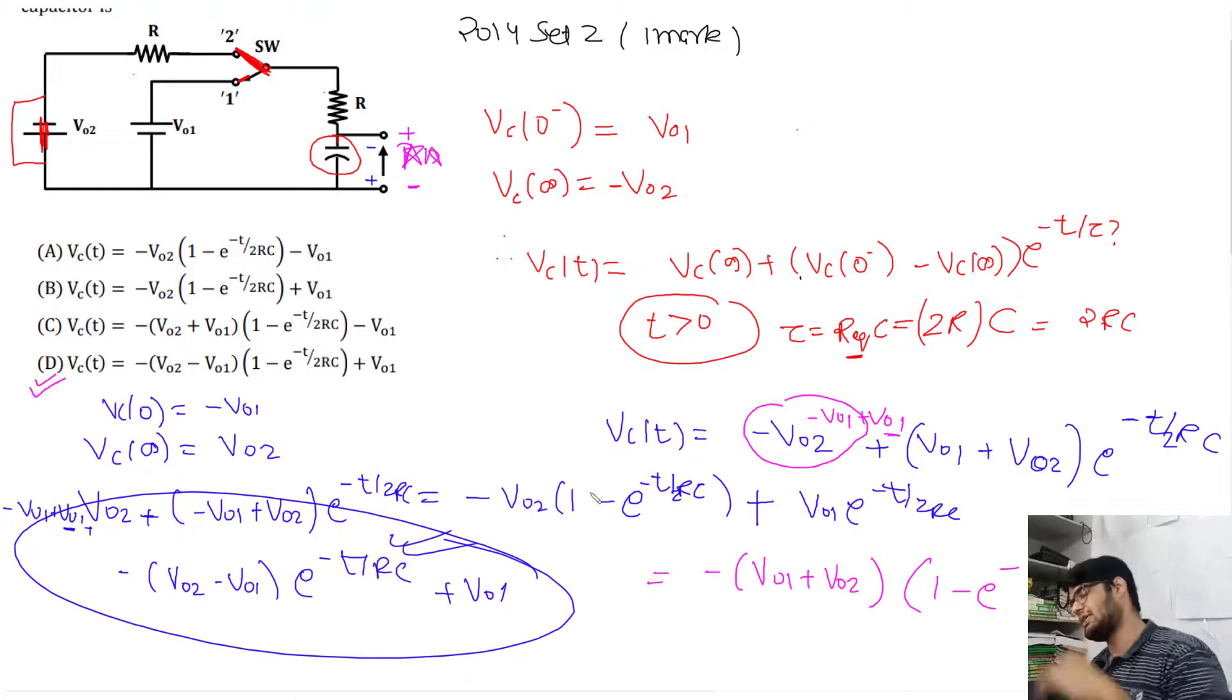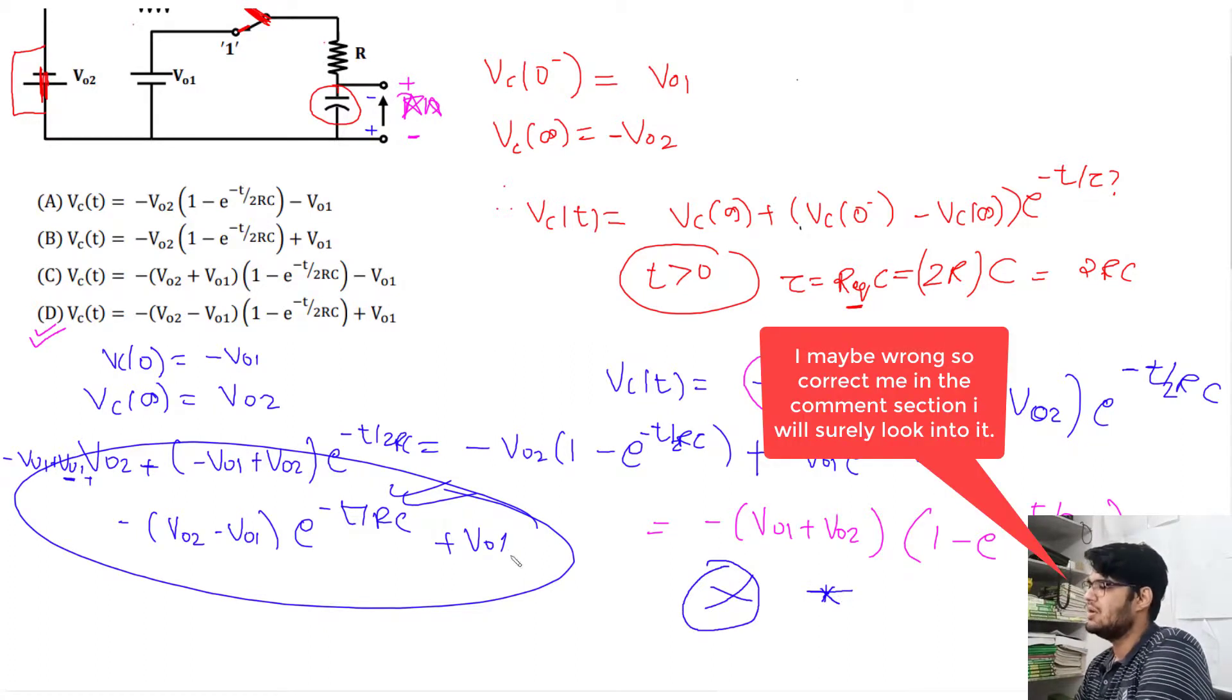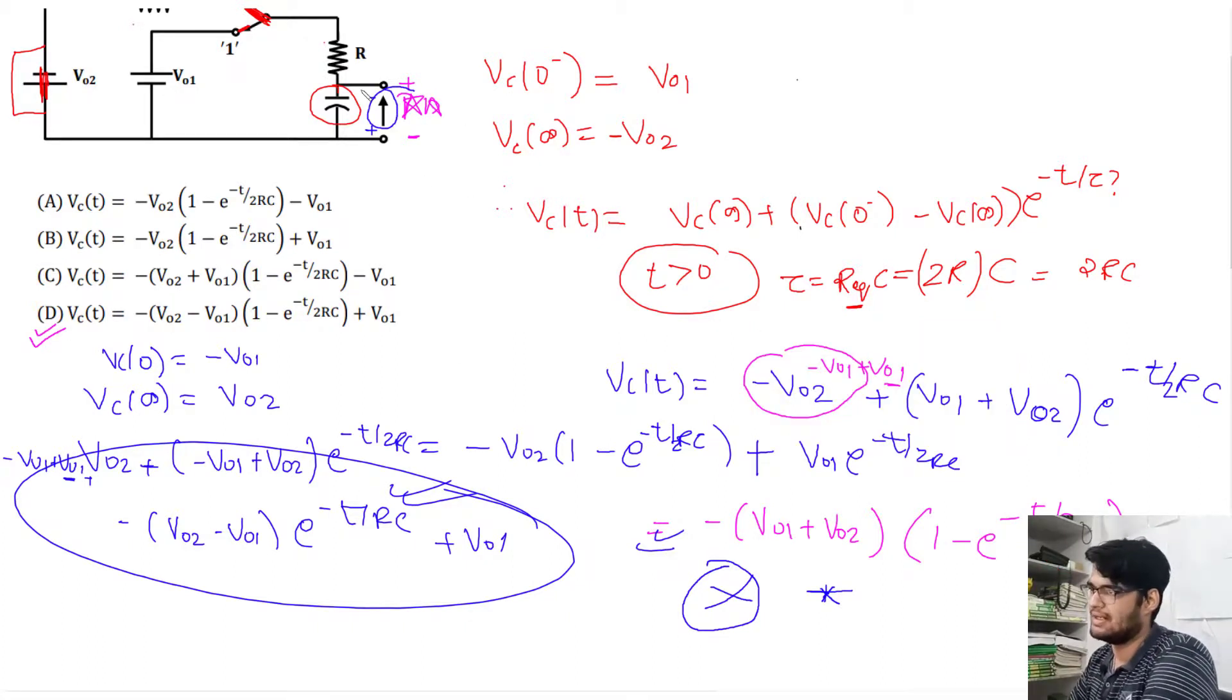That matches option B. So the most confusing thing is that none of the options match. In my Made Easy book also they've given a star, meaning one option won't match. The correct answer should be that the polarity arrow they've drawn - I've checked the official answer. In all three sources, the arrow is given in this direction. So check carefully. See you in the next video, thank you, bye.